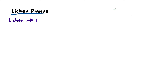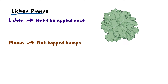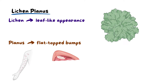Lichen refers to a leaf-like branching appearance, and planus signifies the flat top nature of the bumps that characterize the condition. Lichen planus is an autoimmune inflammatory condition that often targets the skin but can also make an appearance inside the mouth.